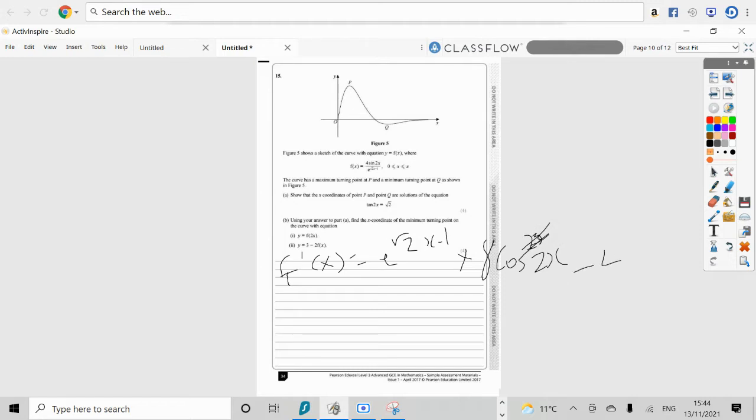Minus, at the top, 4 sine 2x multiplied by the derivative of the bottom, which is root 2, e to the power of root 2x minus 1, because e to the kx differentiates to e to the kx. Divide that lot by the bottom squared, so e root 2x minus 1, all squared.